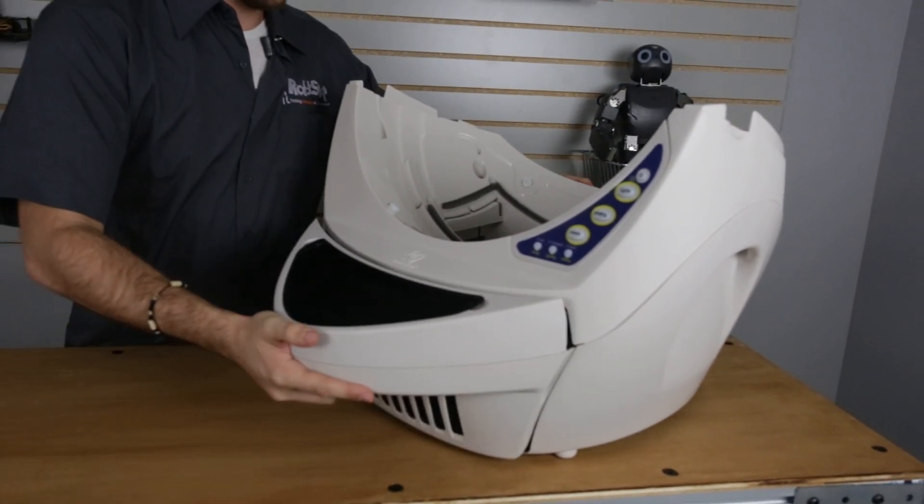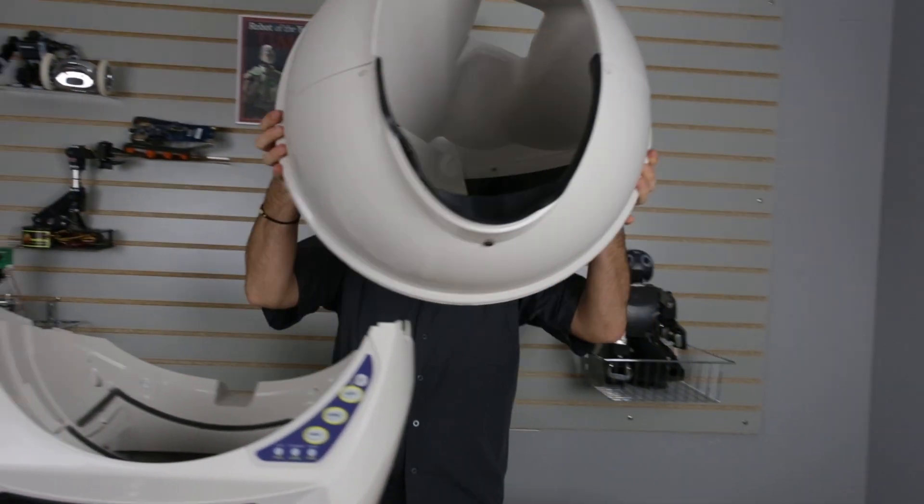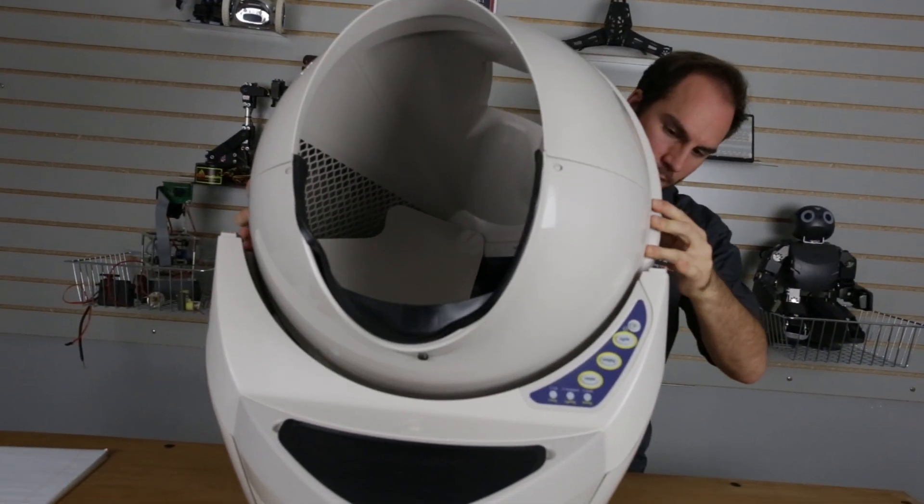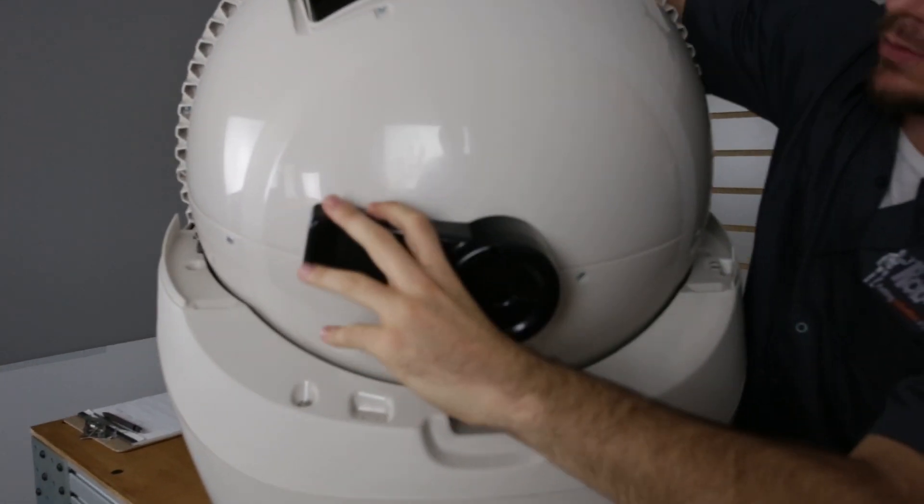Put the drawer back in. Put the globe back. Lock the black key back in place.